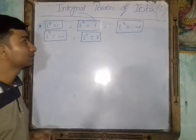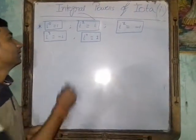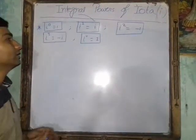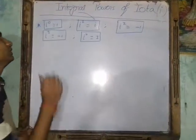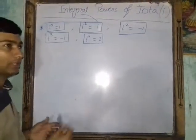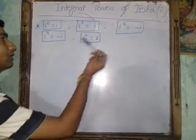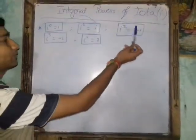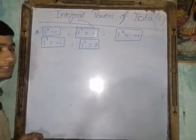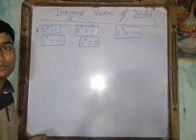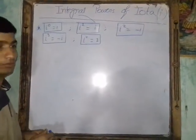In the last class, we learned all the values: i to the power 0 is equal to 1, i to the power 1 is equal to i, i squared is equal to minus 1, i cubed is equal to minus i, and i to the power 4 is equal to 1.